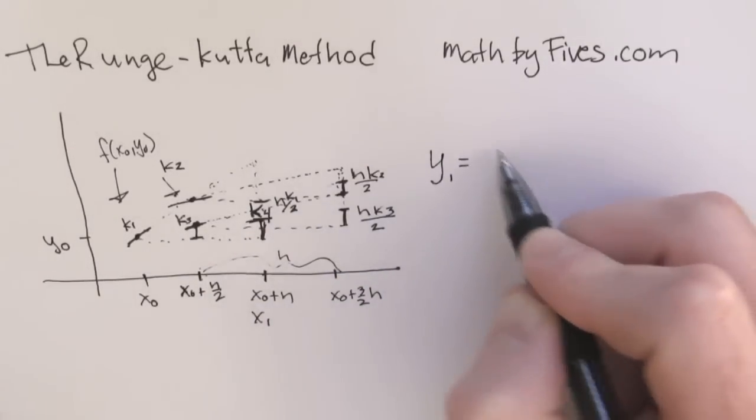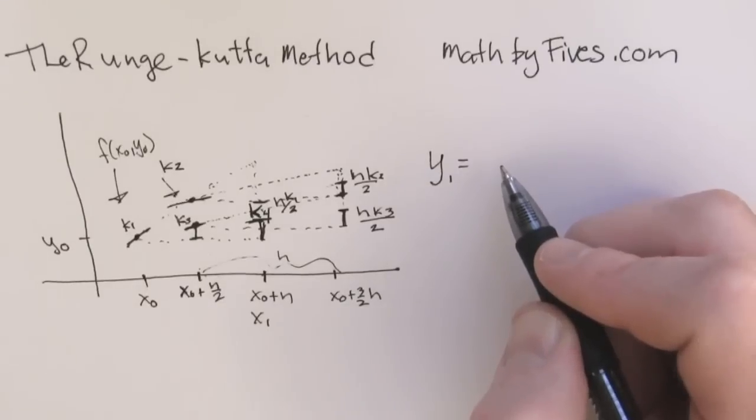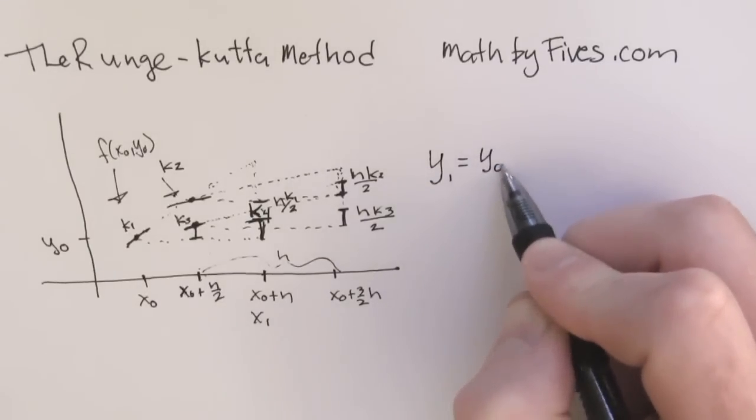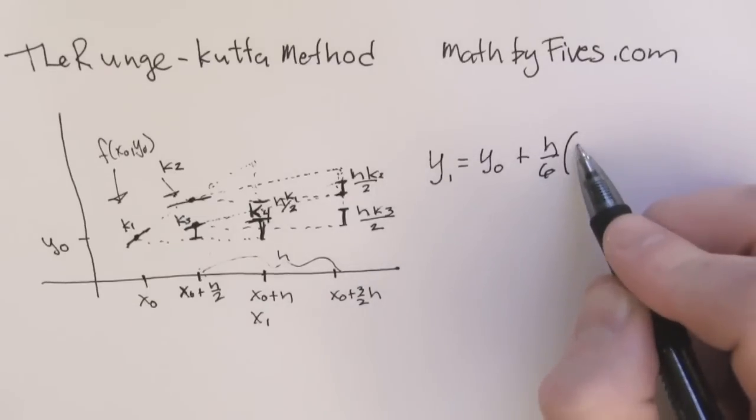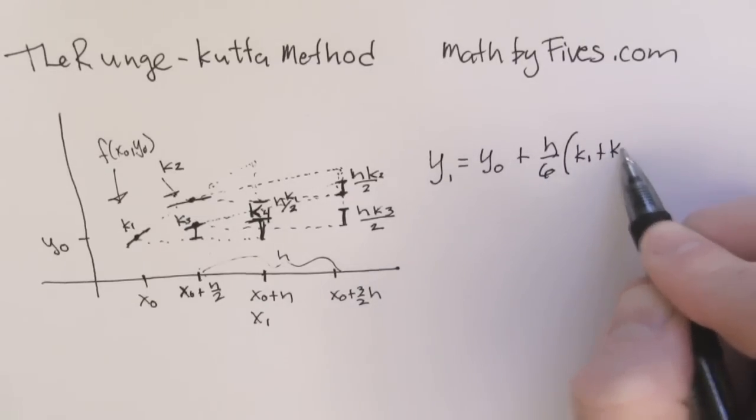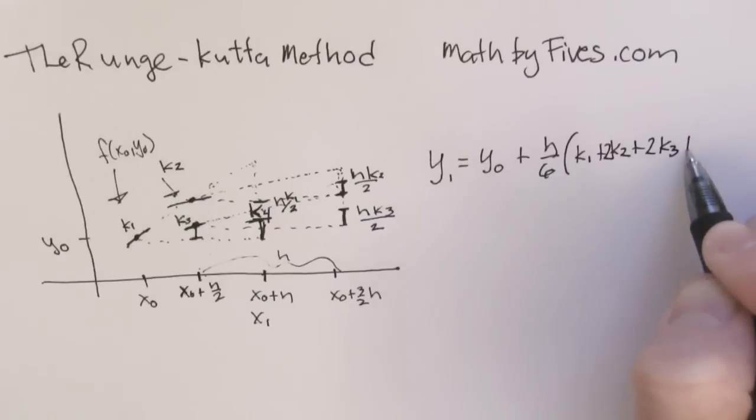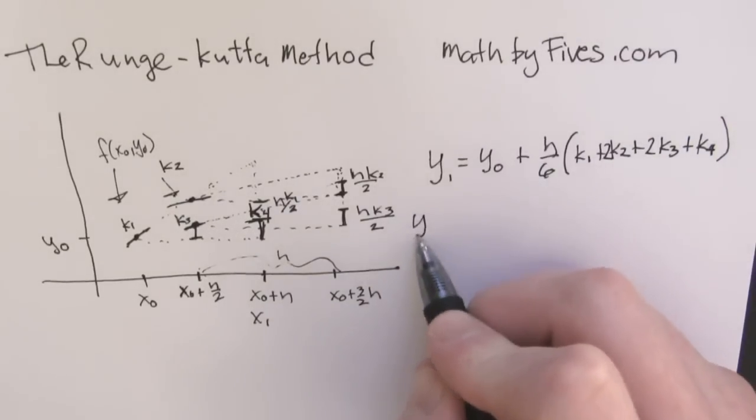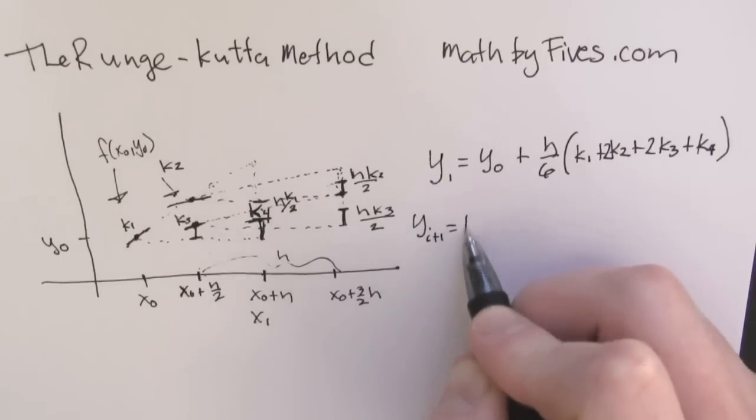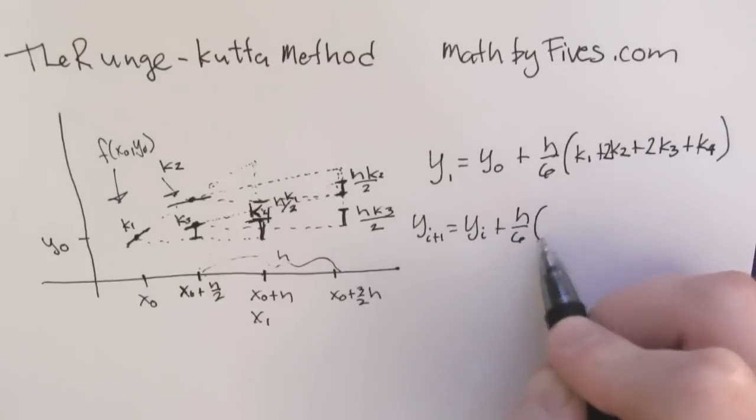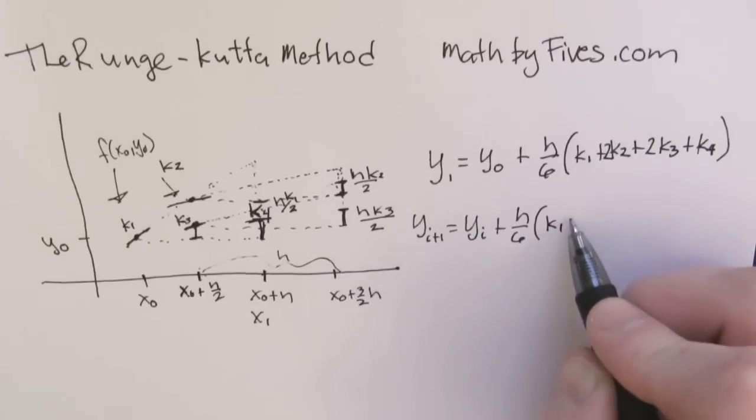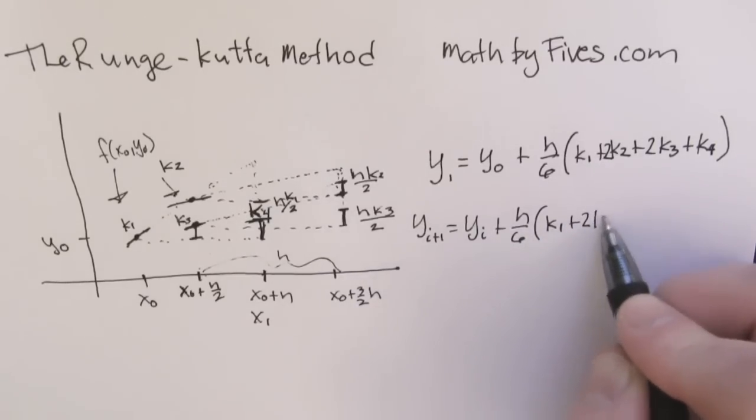Now we're going to write it out. This is how we average the slopes. We take our old heights, and then we're going to multiply it by the weighted average. It's going to be 1/6th the step plus k1 plus 2k2 plus 2k3 plus k4. Let's clean this up a bit and make it more general.